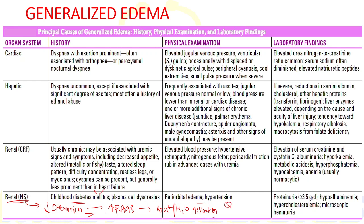In nephrotic syndrome, history may include childhood diabetes mellitus — the most common cause of nephrotic-range proteinuria — or plasma cell dyscrasia. The edema is usually periorbital and most prominent in the morning. Associated hypertension may be present. Labs show nephrotic-range proteinuria (≥3.5 g/day), hypoalbuminemia, hypercholesterolemia, and microscopic hematuria if associated with membranous glomerulopathy.